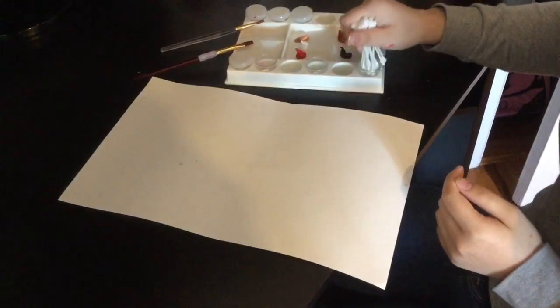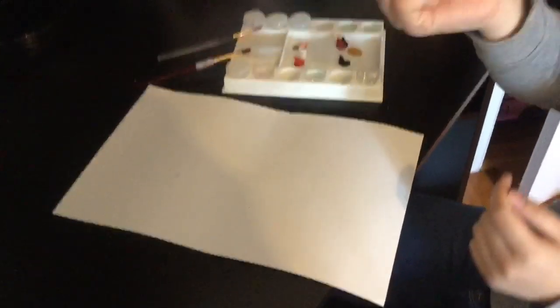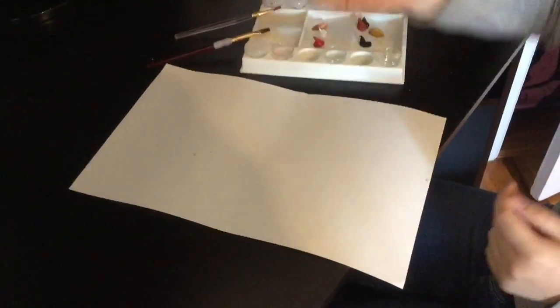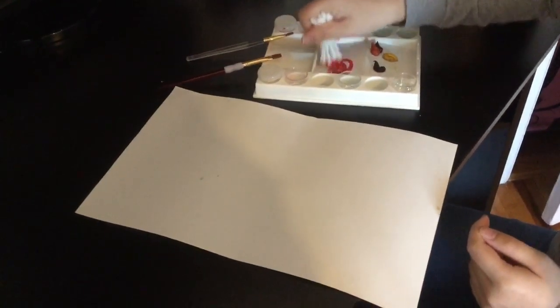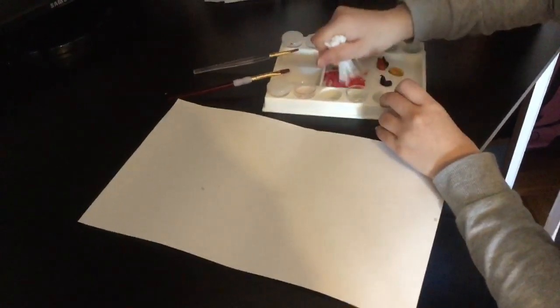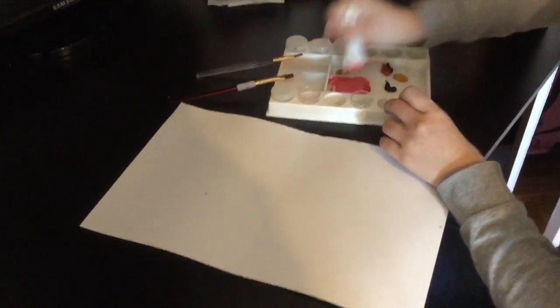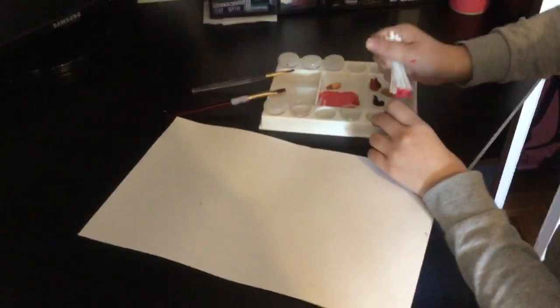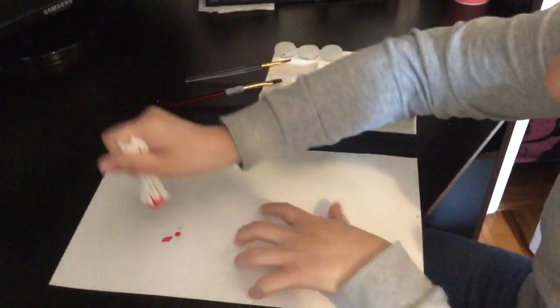So first we're going to wet all our Q-tips, grab 10 or more Q-tips, bundle them together, and then we're going to mix the red and white together to make a lovely pink. Dip some water, a little bit, and then you dot it.